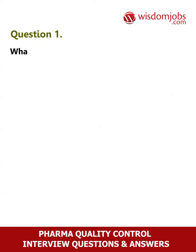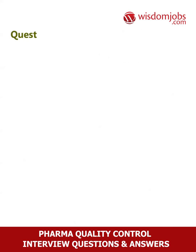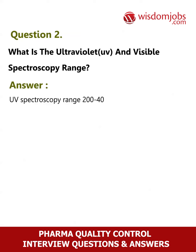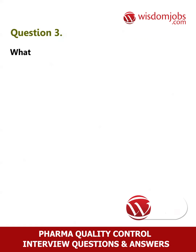Question 1: What is room temperature? Answer: 25 degrees centigrade. Question 2: What is the ultraviolet (UV) and visible spectroscopy range? Answer: UV spectroscopy range is 200 to 400 nanometers; visible spectroscopy range is 400 nanometers to 800 nanometers.